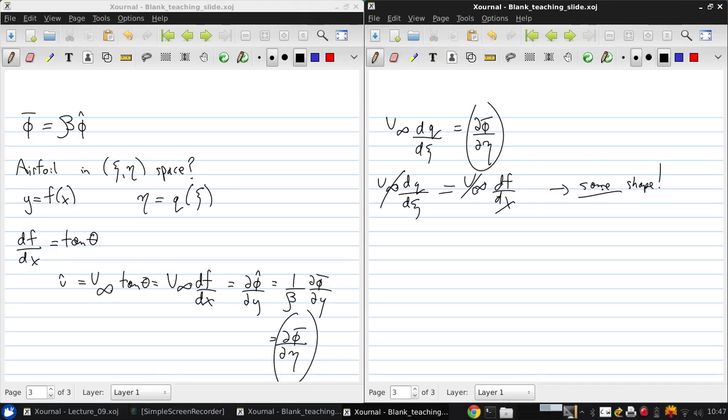So this is really remarkable. What this now says is that the transformation that we've done relates the compressible flow over an airfoil in xy space to the incompressible flow over the same airfoil in the C-eta space. So this is going to lead us to a very useful result. So let's continue on.